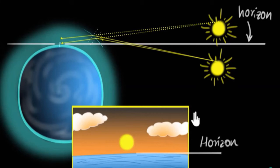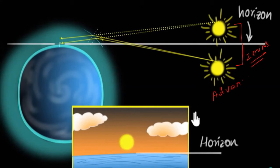Anything in the universe which we see is not real; we are only seeing the apparent positions, because we are receiving bent light — and bending happens because of the earth's atmosphere. This bending phenomenon allows us to see the Sun even before it has actually risen. We start viewing the Sun two minutes before the actual sunrise, which is why this is called advanced sunrise.